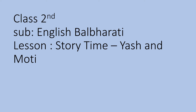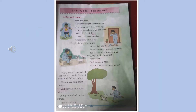English Balbharti Standard 2nd, Unit 1, Lesson No. 1.4 — Story Time: Yash and Moti. Today I am going to tell you a story. The name of the lesson is Story Time: Yash and Moti. In this lesson, Yash is a little boy and Moti is a pet dog of Yash. Now let's start the lesson.